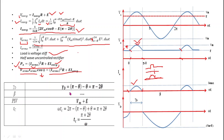The conduction angle of the diode is the angular spread for which VS is greater than E, which occurs only from θ to π-θ. Therefore the conduction angle equals π-θ minus θ, which equals π minus 2θ.